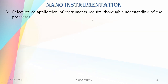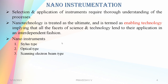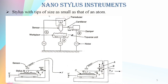The selection and application of instruments require thorough understanding of the processes. This is the ultimate enabling technology — this is nano technology. The basic idea of instrumentation covers the scanning electron beam type and the stylus type.